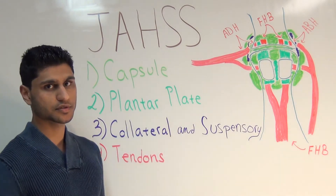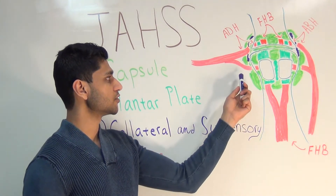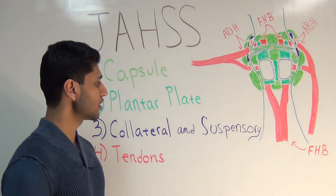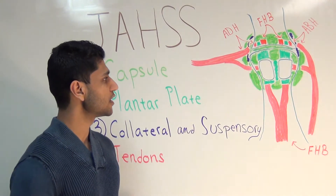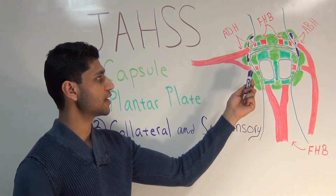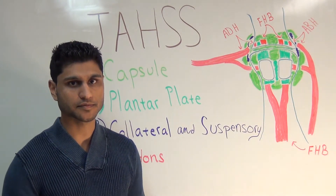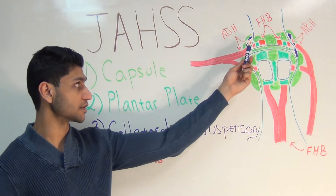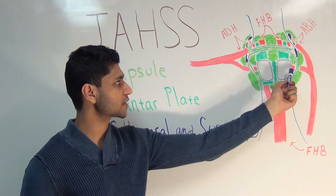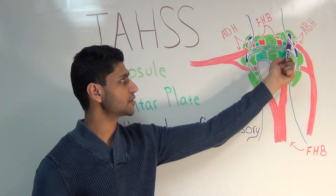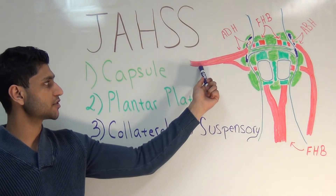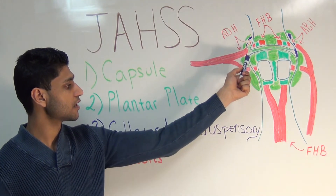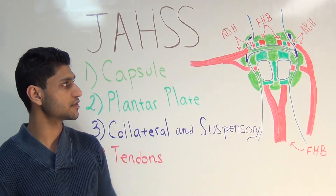You also have two collateral ligaments, a medial and a lateral, which originate from the tubercles on the metatarsal head and then insert on the tubercles on the base of the proximal phalanx. You also have two metatarsal phalangeal suspensory ligaments that originate from the tubercles on the metatarsal head and then insert into the sides of the fibrous capsule. The medial and lateral heads of the flexor hallucis brevis attach to the sesamoids and the base of the proximal phalanx. The abductor hallucis attaches to the medial aspect of the medial sesamoid and to the medial aspect of the base of the proximal phalanx. The conjoined tendons of adductor hallucis attach to the lateral aspect of the lateral sesamoid and to the lateral aspect of the proximal phalanx. All these tendons give contribution to reinforce the fibrous capsule.